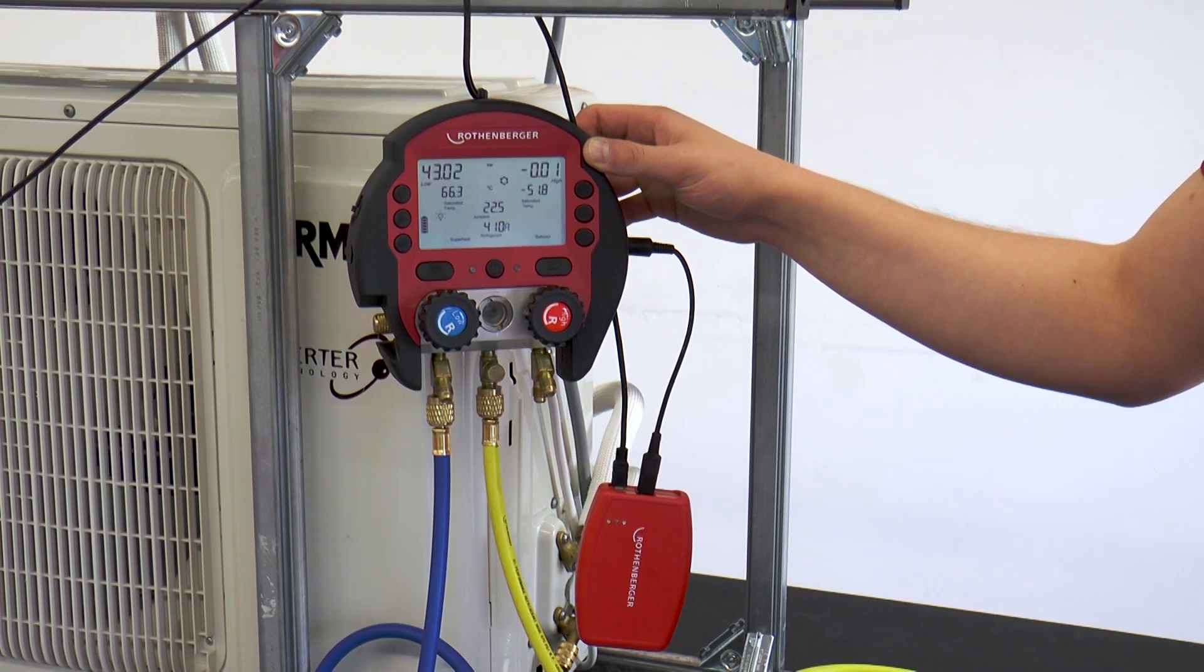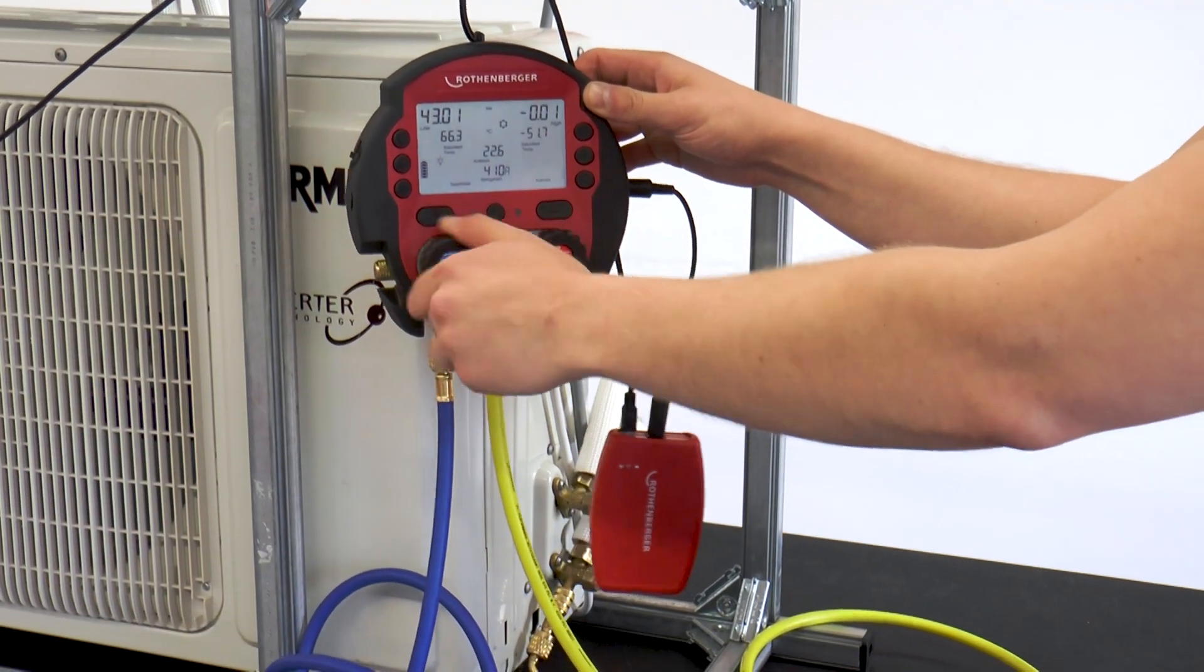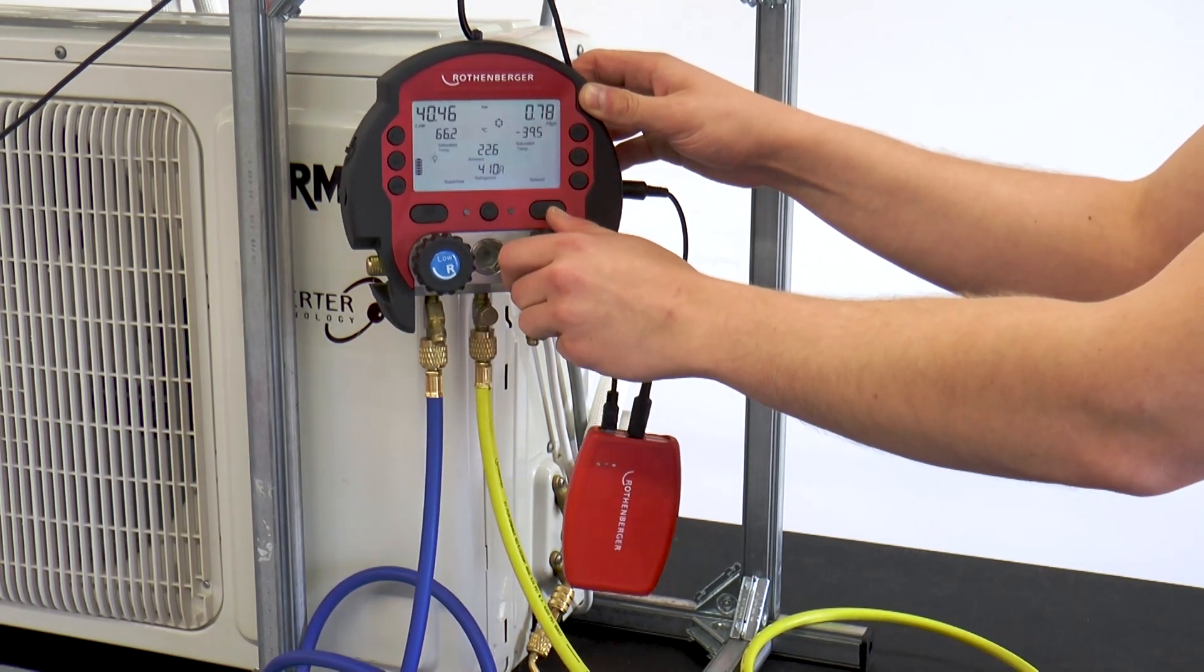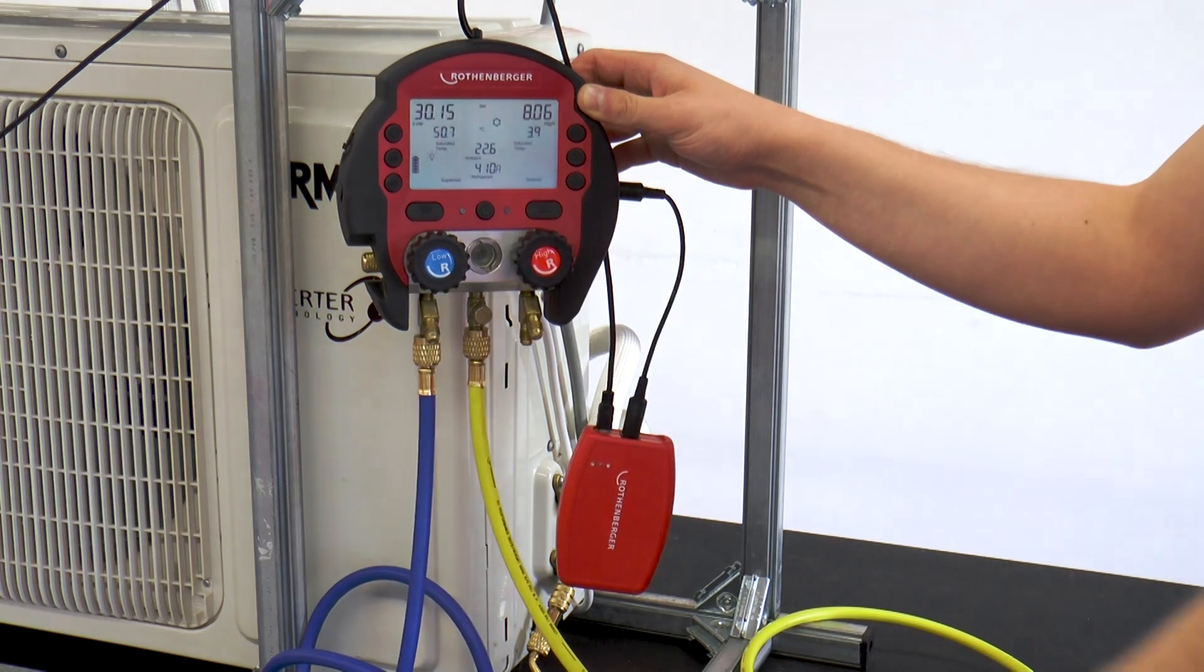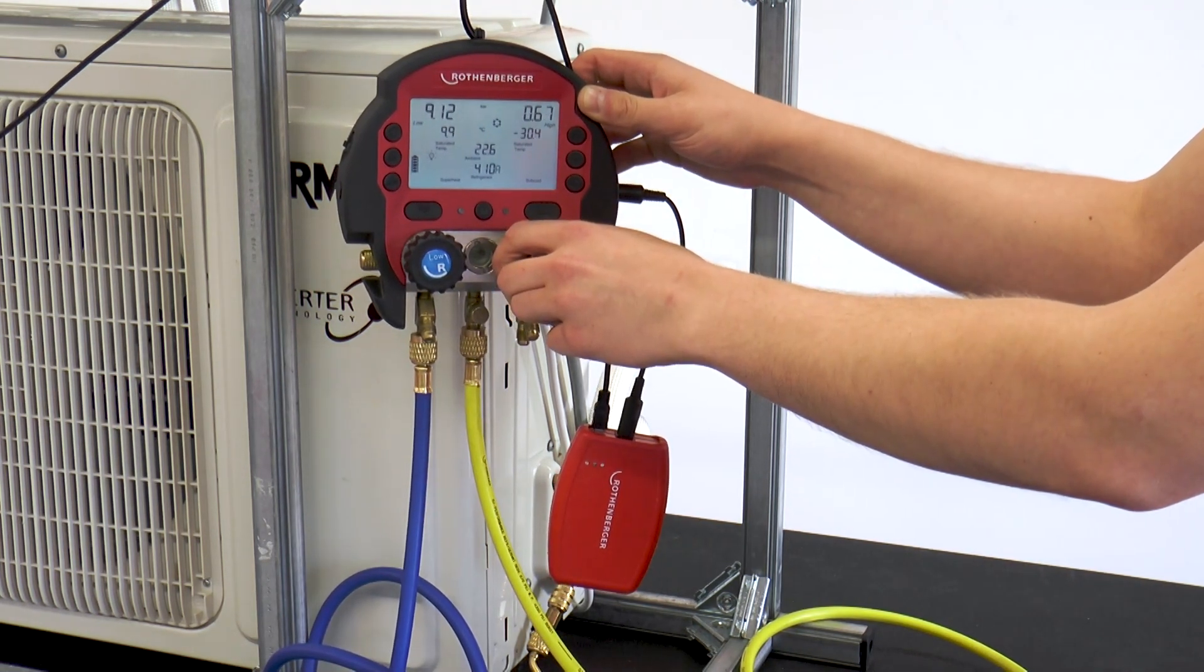For this purpose, the working valve on the low pressure side is opened. Then, the valve on the high pressure side is opened and the nitrogen flows out. This was the load test. The load test is carried out for approximately 30 minutes, unless otherwise specified by the manufacturer.